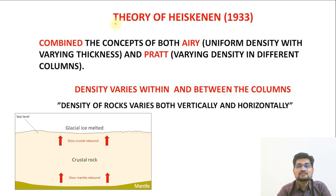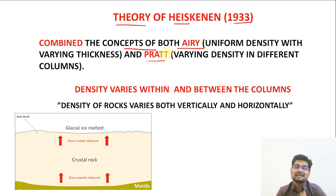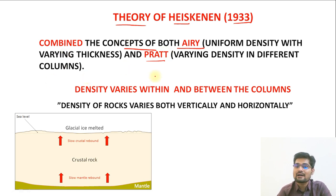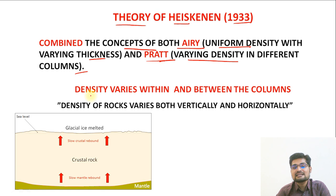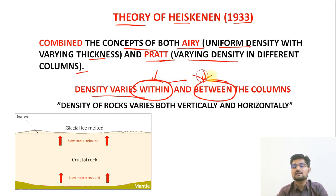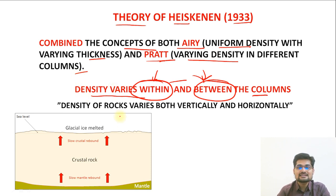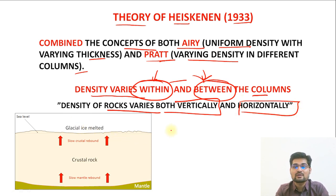Heiskanen's theory in 1933 combined the concepts of both Airy and Pratt. Airy's concept of uniform density with varying thickness and Pratt's concept of varying density with different columns were merged. Heiskanen gave the concept that density varies within as well as between columns — so both within and between the columns. Density of rocks varies both vertically as well as horizontally, so this combined view was presented in 1933.